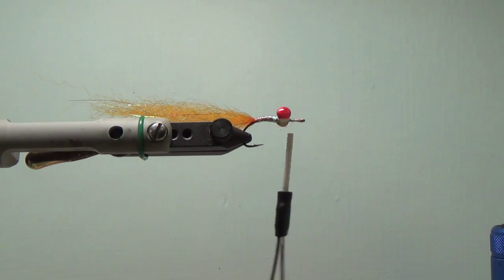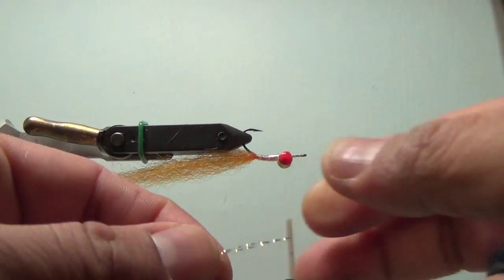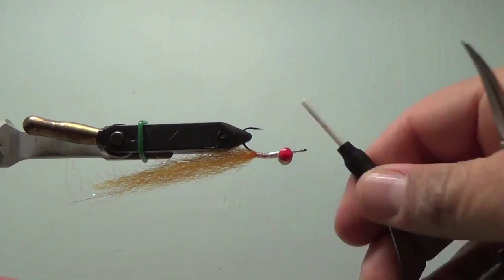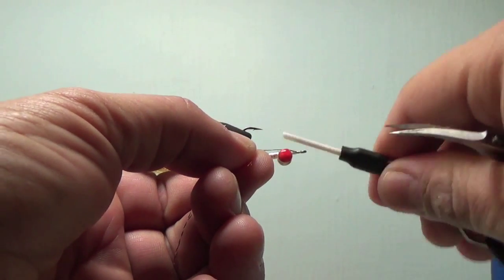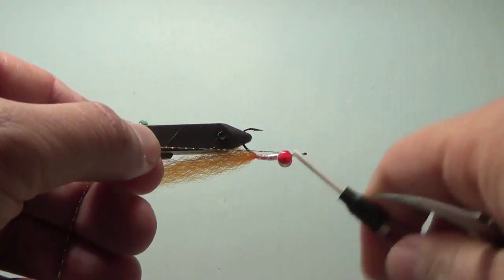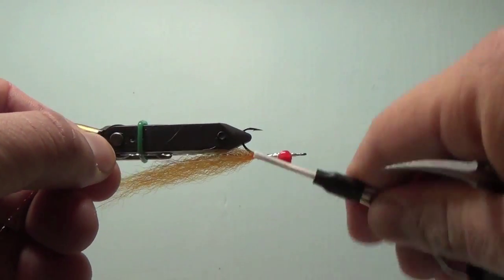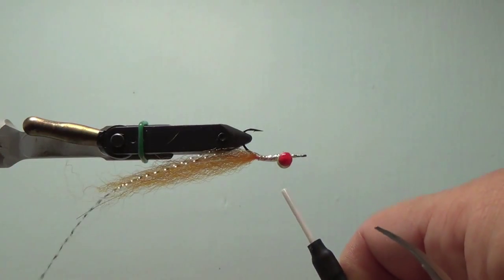Next thing to do is I'm going to add in some, this is some gold crystal flash. So go ahead and just invert the fly here, and you can use different color crystal flash. I've kind of settled on the gold. I like the gold. I think it looks kind of cool on this fly, especially with this orange, and it really sets it off.